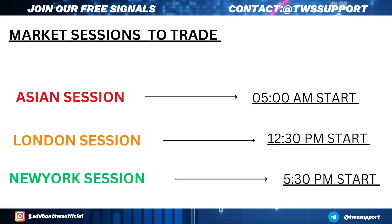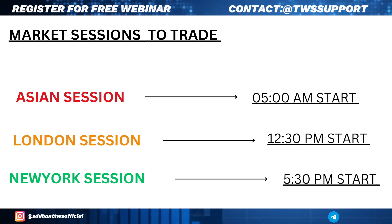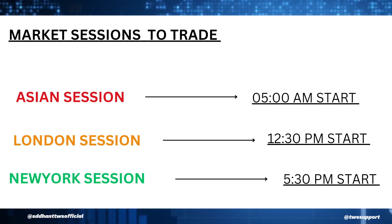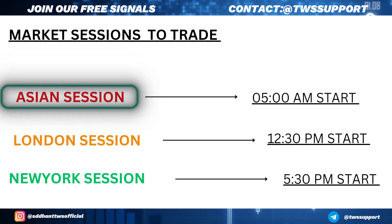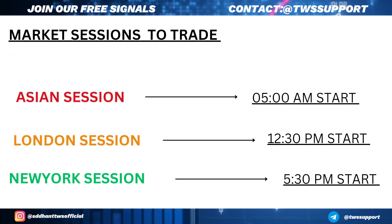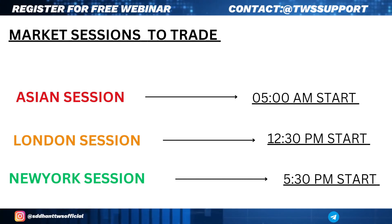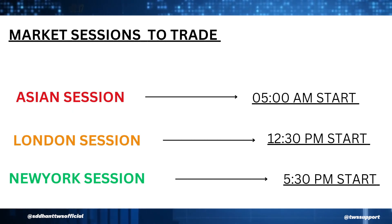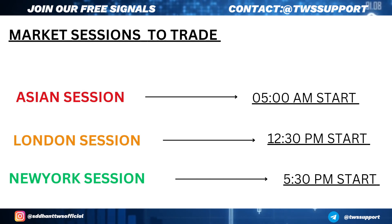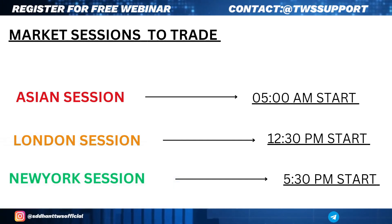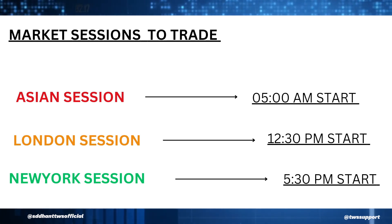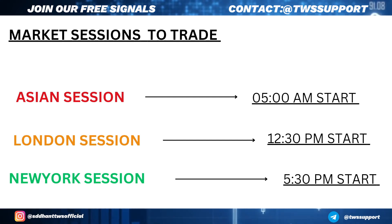In Forex trading, there are 3 sessions. The first session starts at 5 o'clock and is called the Asian session — this session has less volume. The second is the London session, which starts at 12 o'clock India time and has higher volume. The third is the New York session starting at around 5 o'clock, which has the most volume. London and New York sessions are the best for trading with high volume.